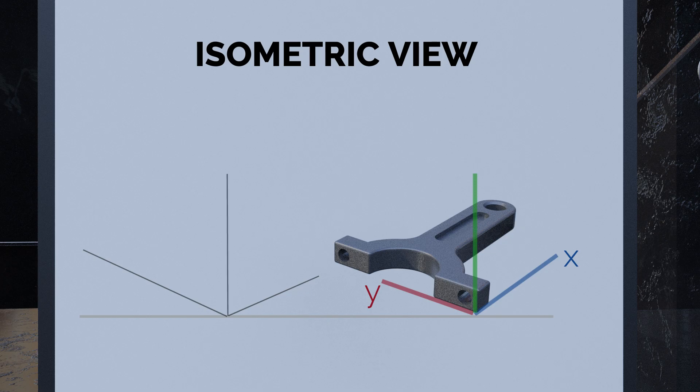The drafter then draws a vertical line at a 90 degree angle from the horizontal line, representing the Z axis. The intersection of the three lines forms the isometric axis, which the drafter uses to draw the object.